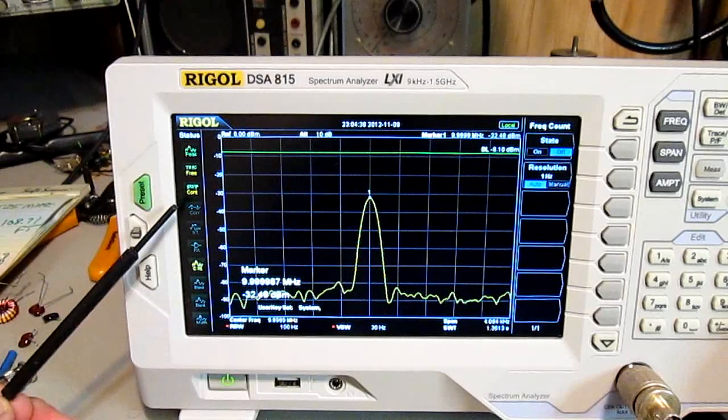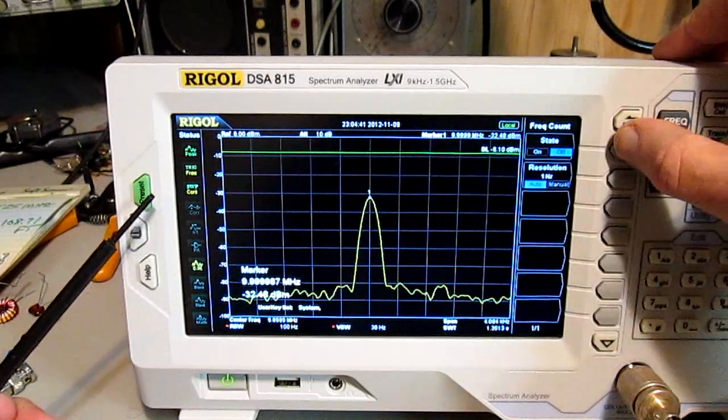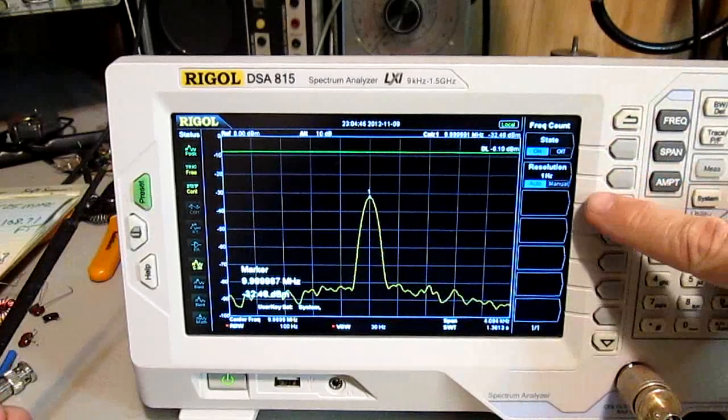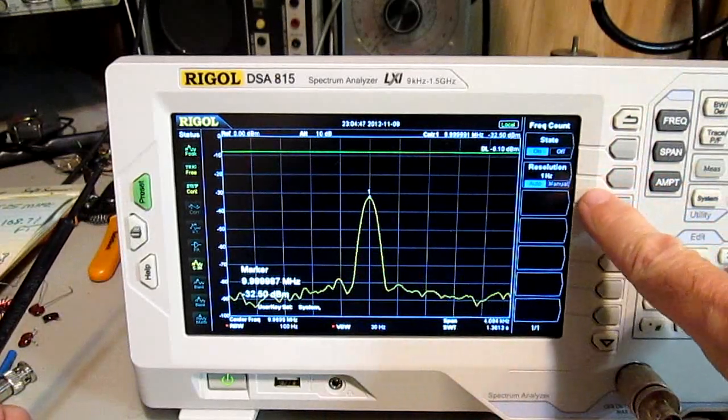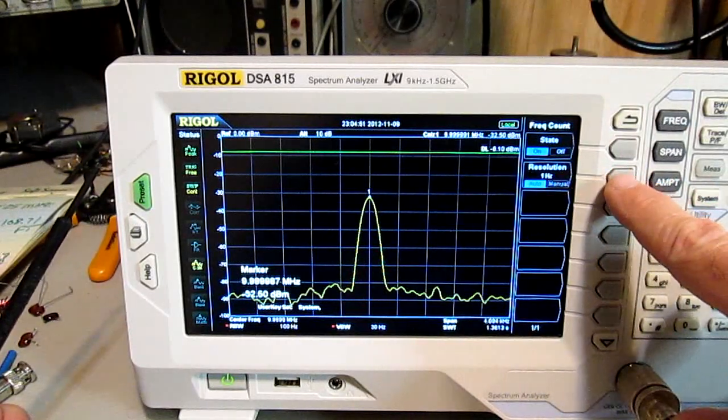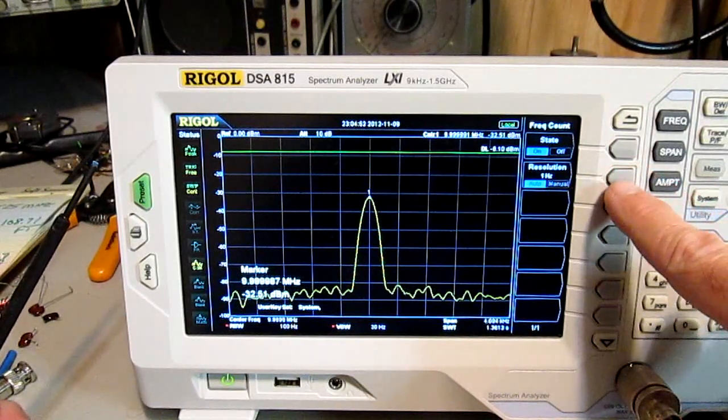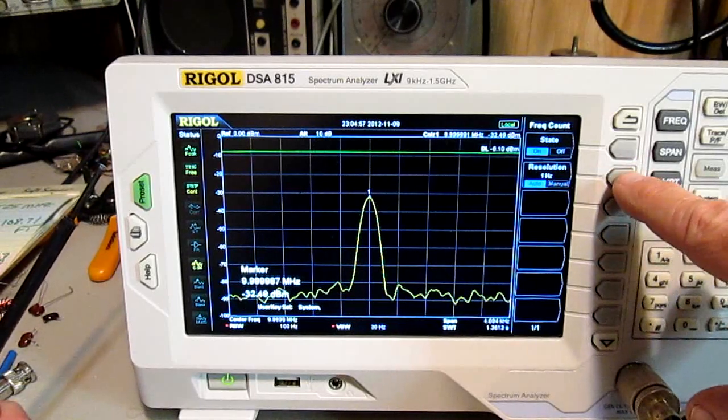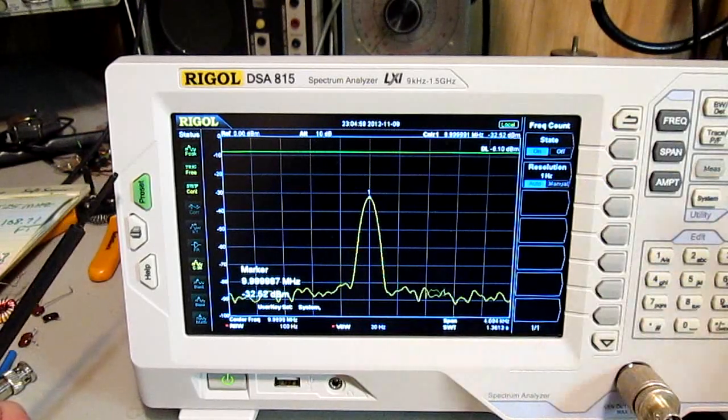So when you turn the frequency counter on, this next one here says resolution, 1 hertz, auto and manual. It's set to 1 hertz right now, because the span is really narrow, most likely is why. And so it should be measured down to 1 hertz.